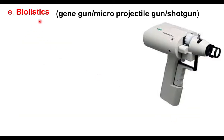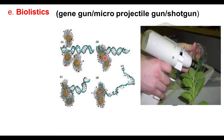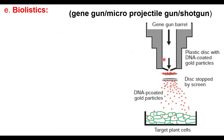DNA can also be directly transferred using a technique called biolistics, or gene gun, or micro projectile gun, or shotgun. DNA is coated onto gold or tungsten particles. These particles are delivered into the cell using a gene gun — as the particles move, the DNA also moves into the cell. The DNA-coated gold particles are attached to a plastic disc inside the gene gun.